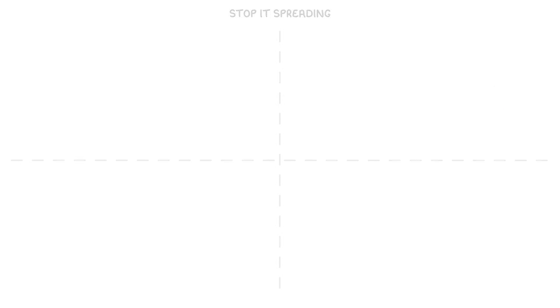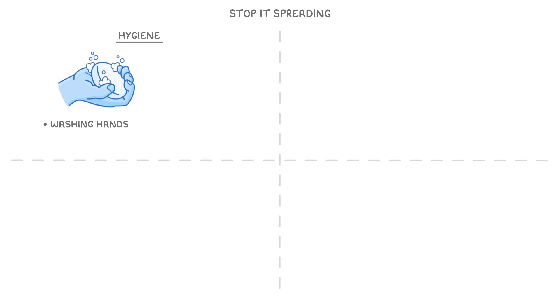The only thing better than treating a disease is to stop it from spreading in the first place. The common sense way to do this is by being generally hygienic, such as washing your hands after you've used the bathroom and before preparing foods, and by cleaning cooking items such as knives and chopping boards.